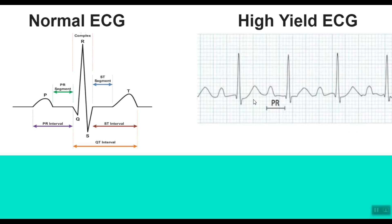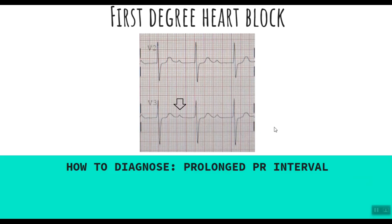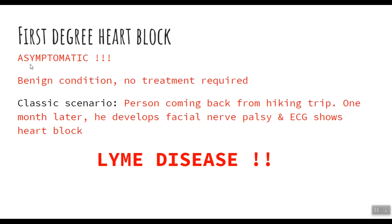I hope you're thinking first degree heart block — a very important condition for the exam. Here is another ECG showing first degree heart block with a very long PR interval compared to normal. The prolonged PR interval is how you'll diagnose it on the exam. First degree heart block is asymptomatic and benign and does not require treatment. A classic exam scenario: a patient returning from a hiking trip develops a target rash, bilateral facial nerve palsy, and ECG showing heart block — think Lyme disease.